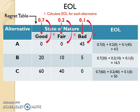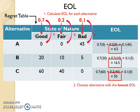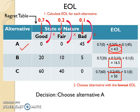After EOL for all alternatives have been calculated, the next thing to do is to identify the lowest EOL. Here the lowest EOL is 4.5, therefore the decision is to choose alternative A.